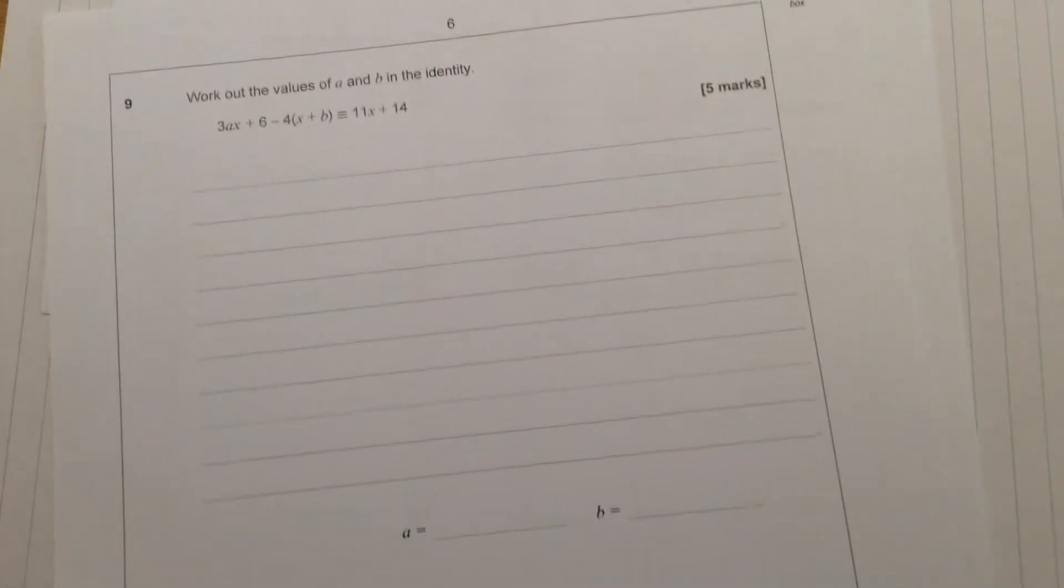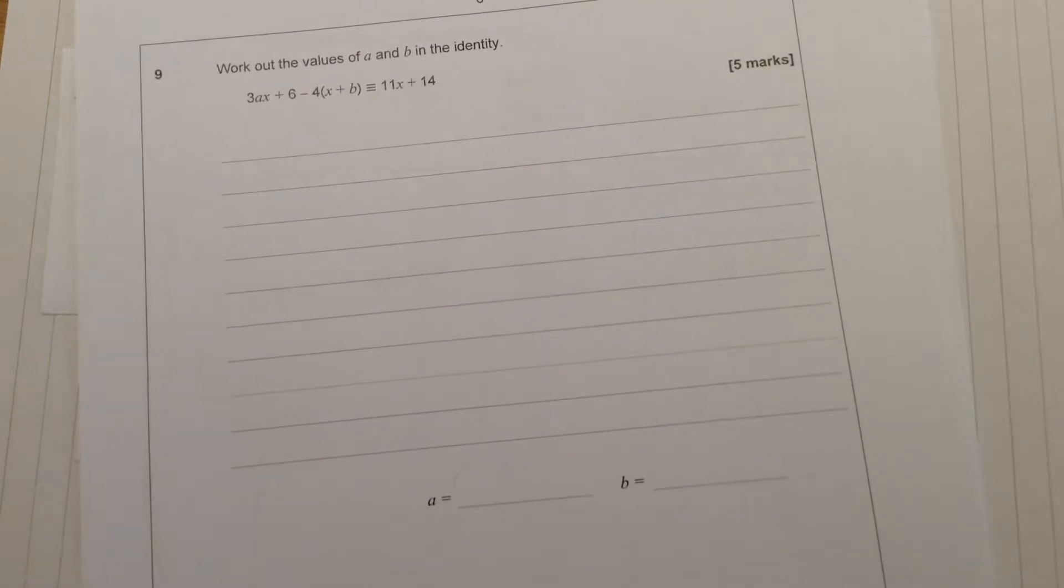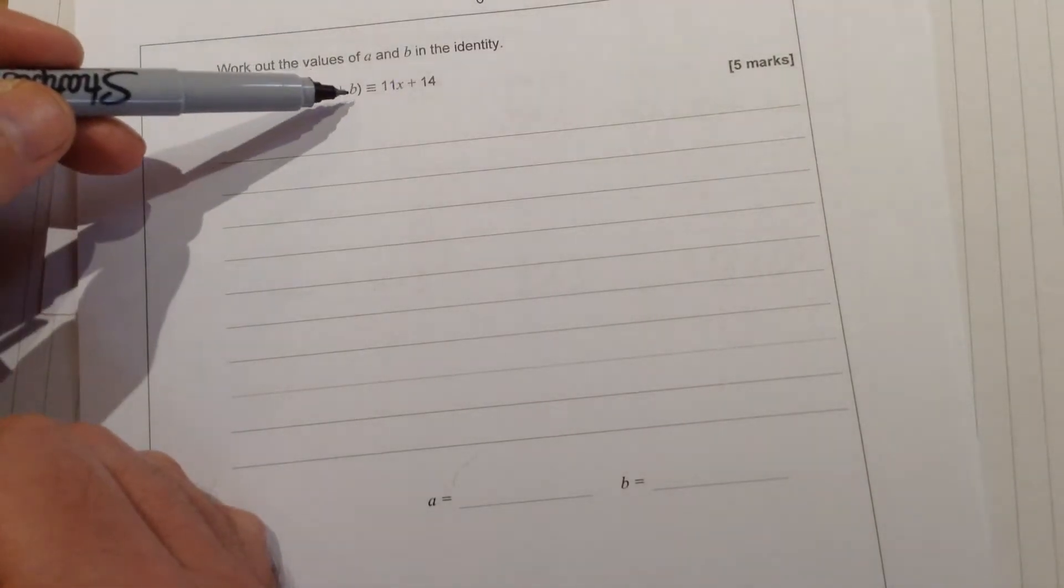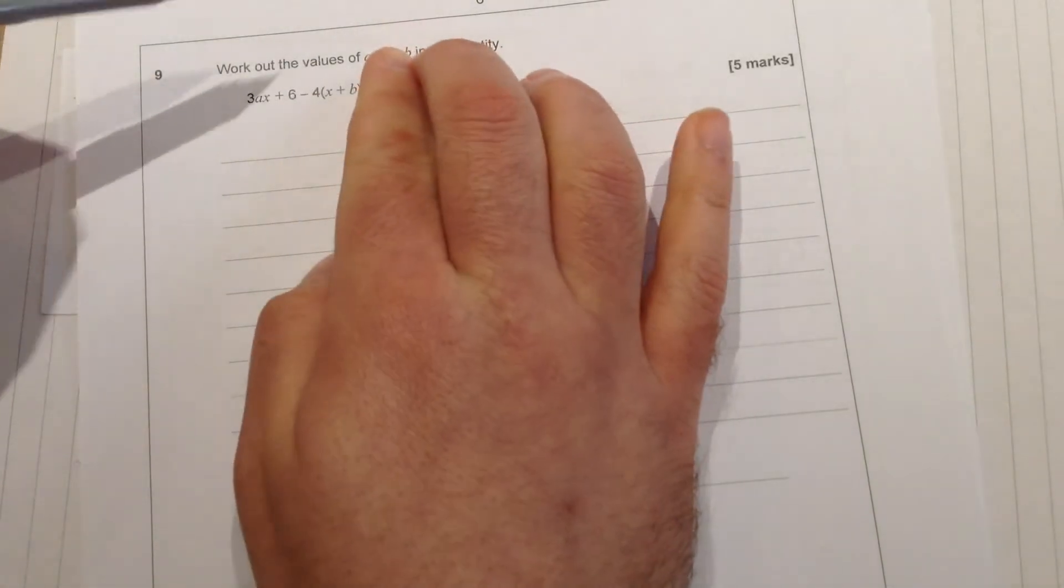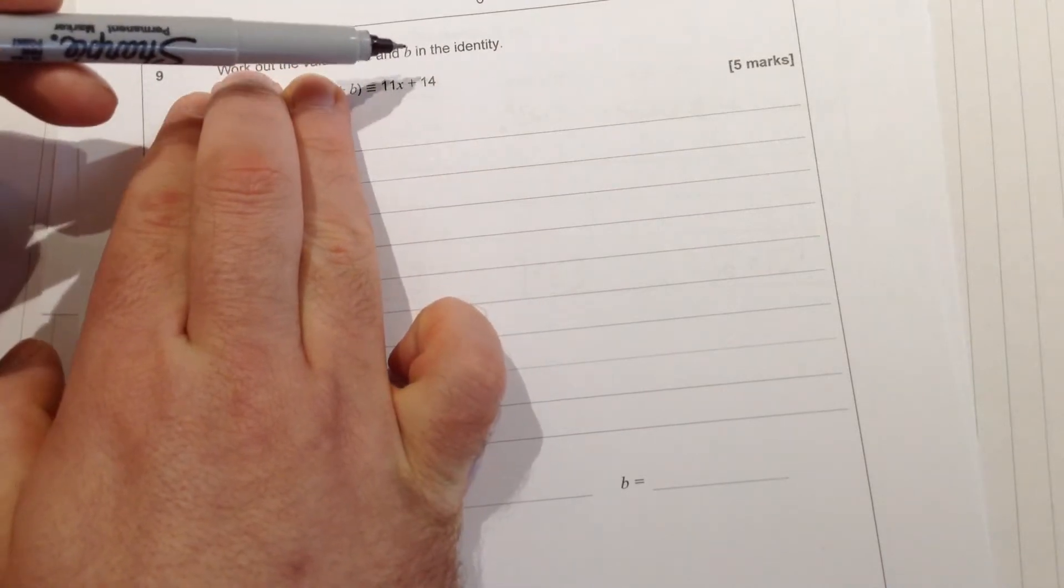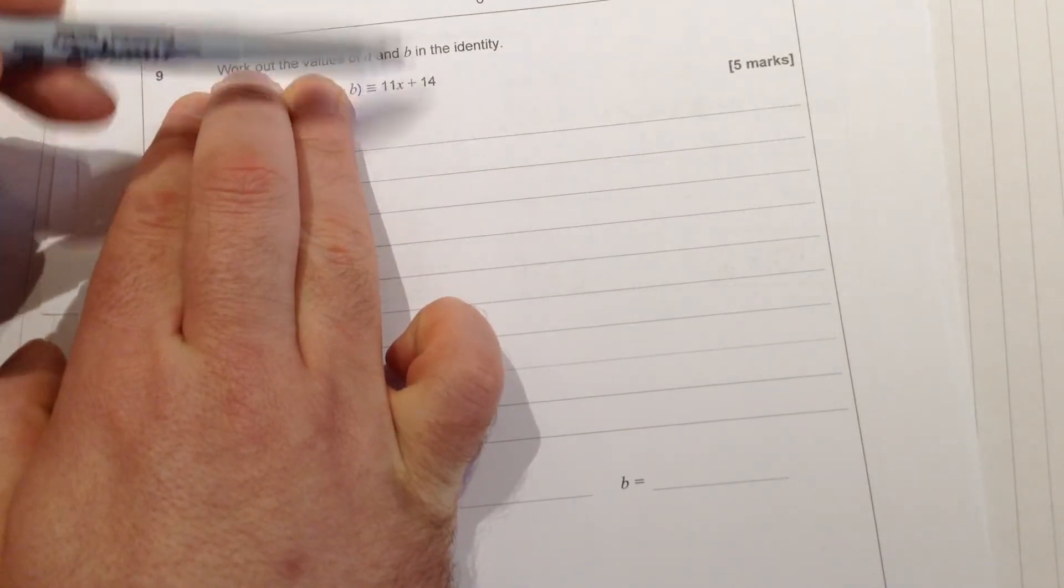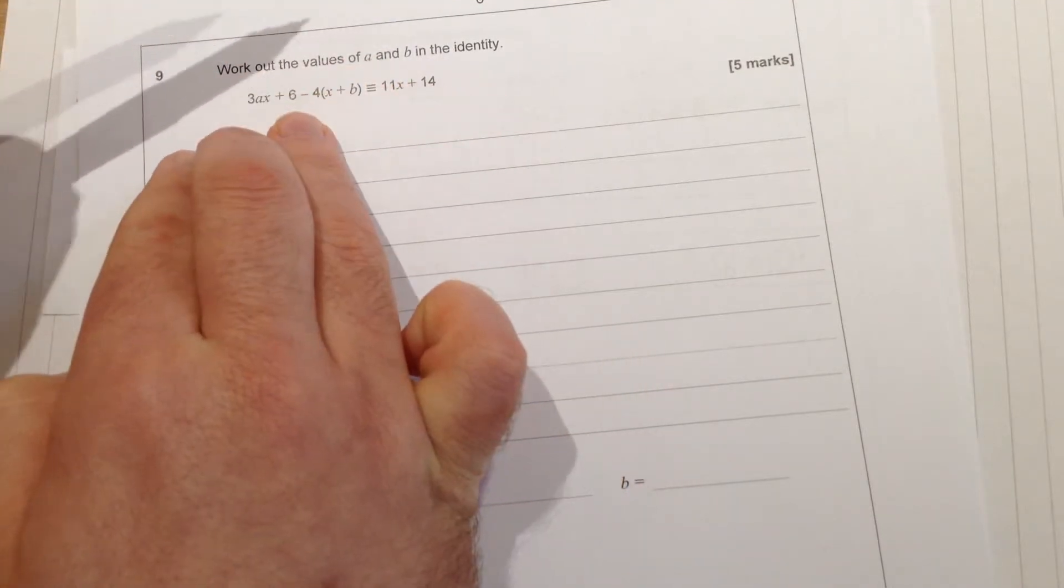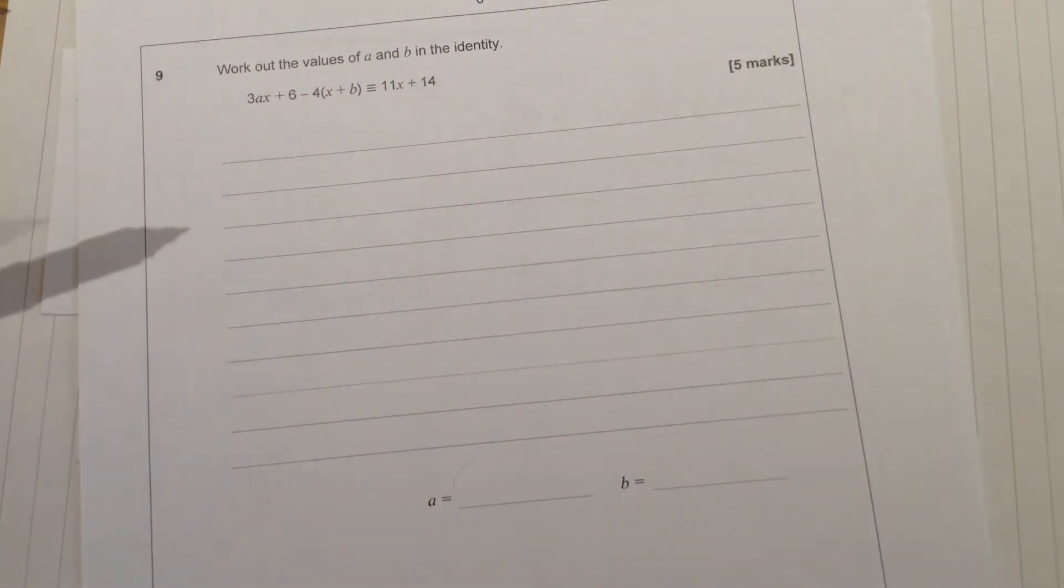Here's the final question for this video. So here all we need to do is try and find what value of a and what value of b would mean that this on the left hand side is always equal to this on the right hand side. That's the meaning of an identity, that these two are exactly the same no matter what value of x is used. Hence why we've got the three equal sign to mean identity.